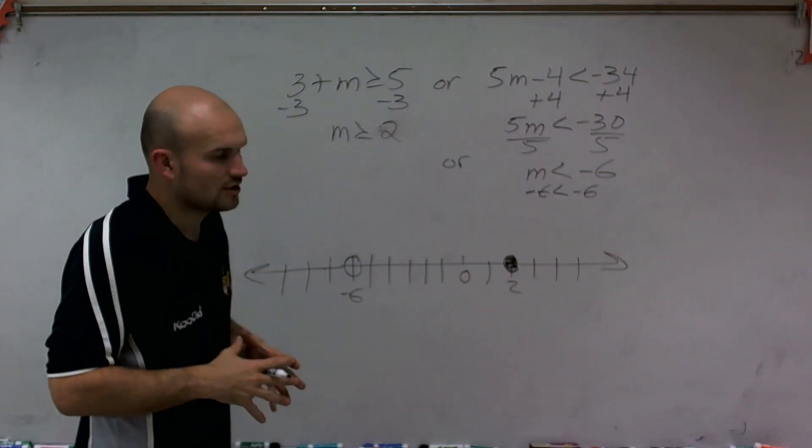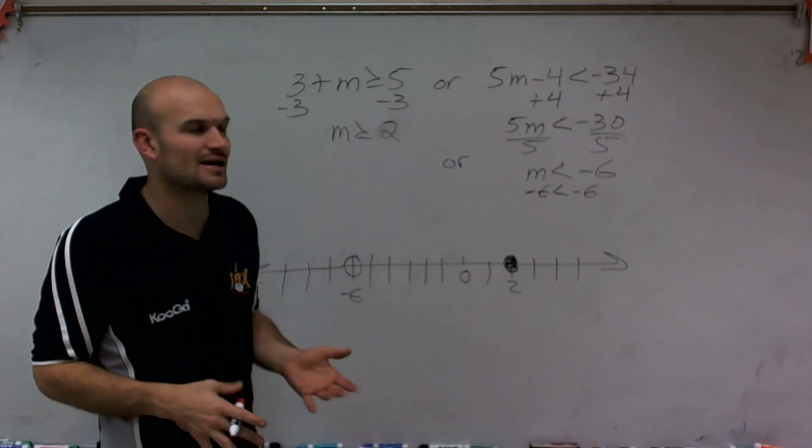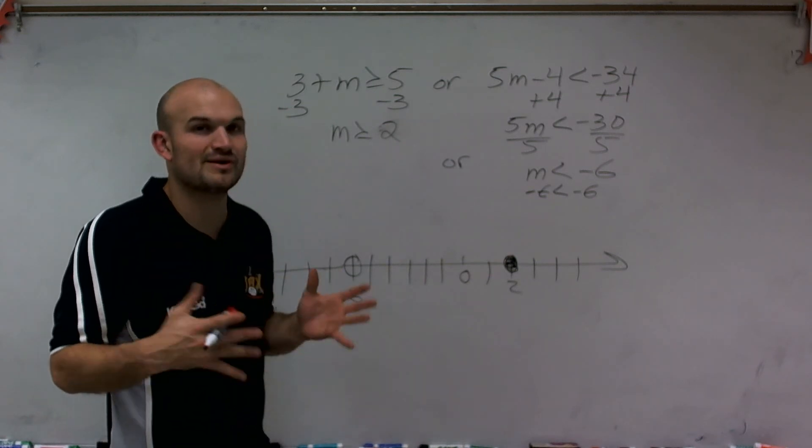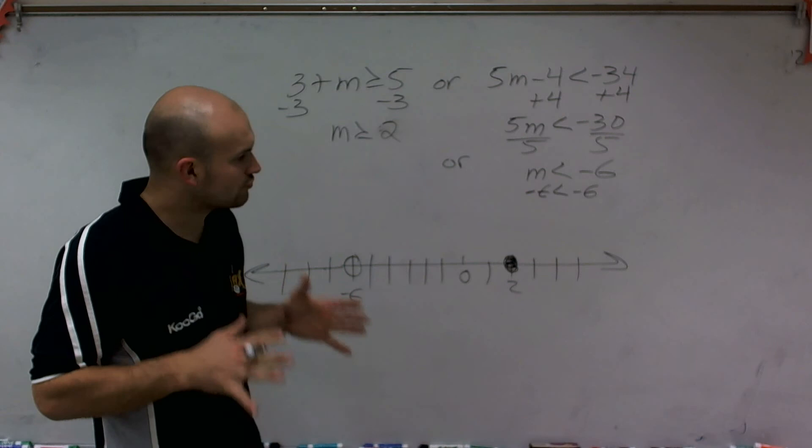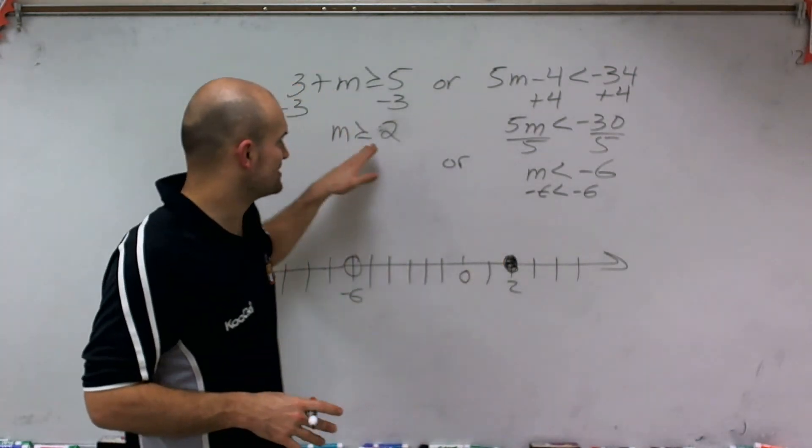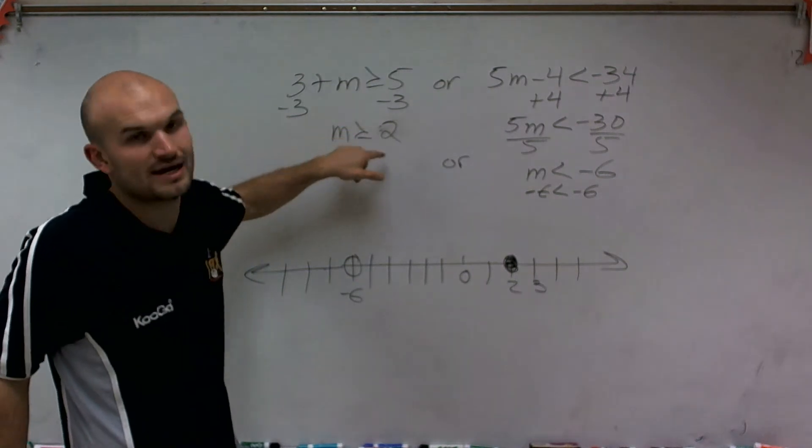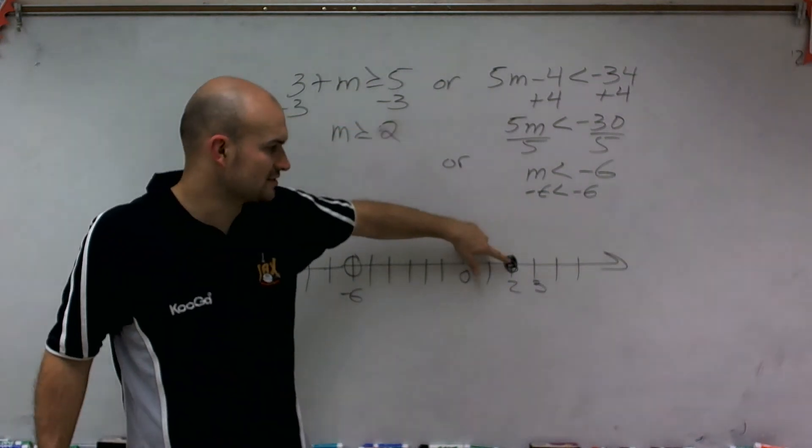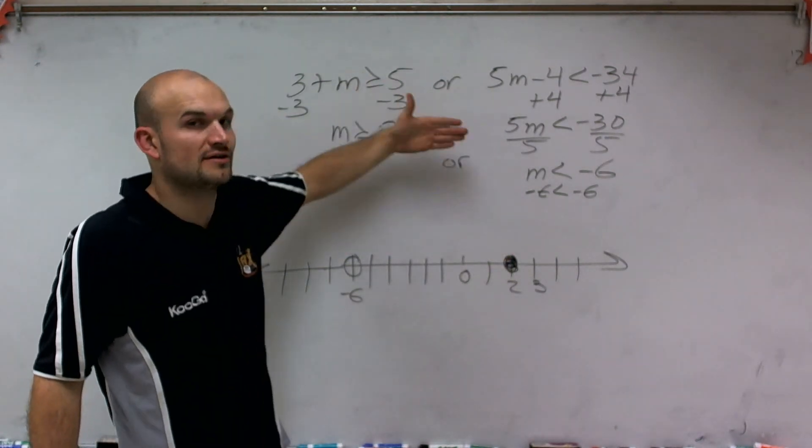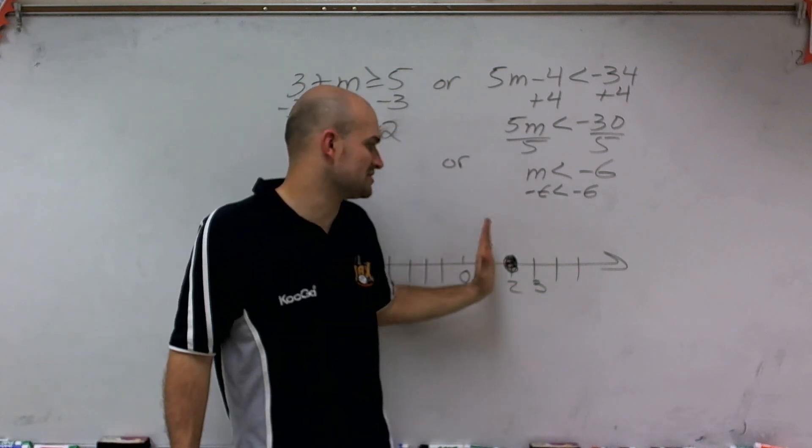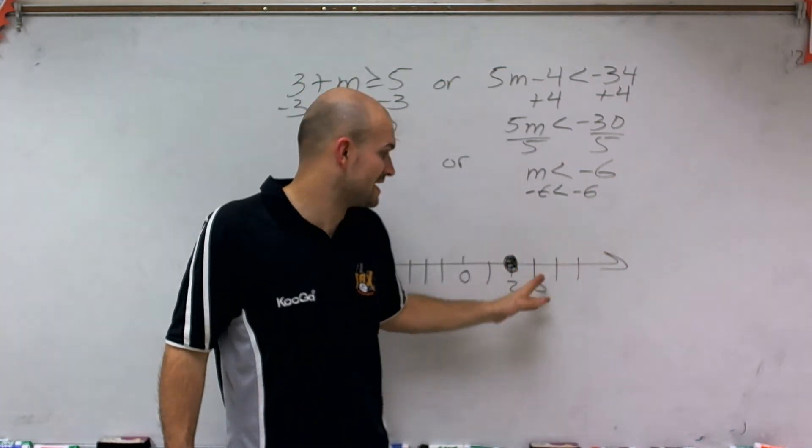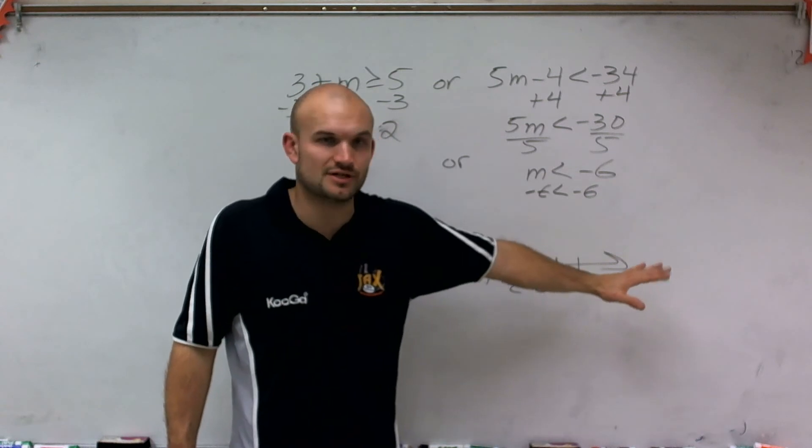All right. Now, there's a couple of really easy ways you can kind of graph this. But what I'm going to do is pick test points. Because to graph, you can always just kind of say it out loud. And I think this kind of speaks for itself. It says m is greater than or equal to 2. We know it's equal to, but all values that are greater than 2. Well, obviously, the greater values are going to go in the positive direction. You can see I get to 3, to 4, to 5. Those are all numbers that are greater than 2.